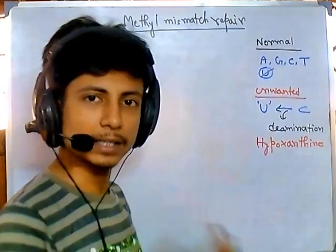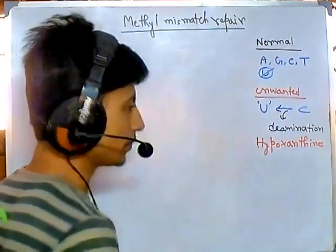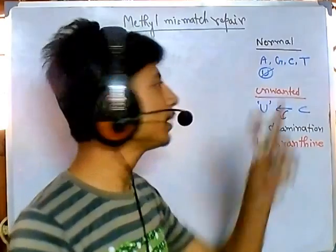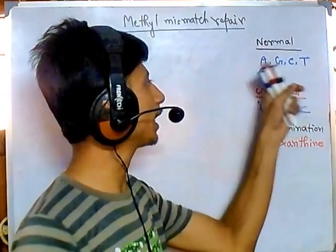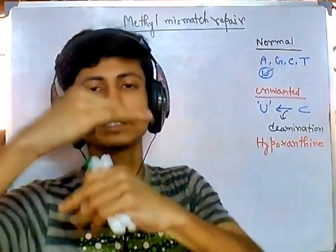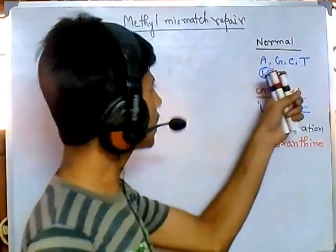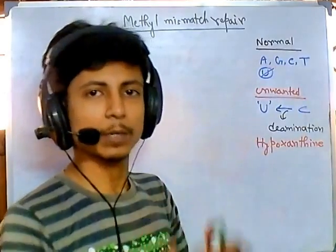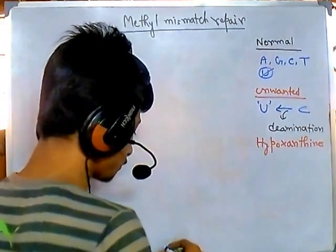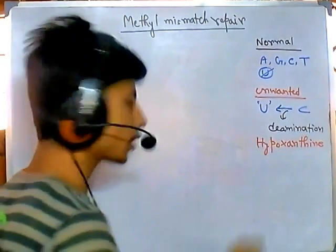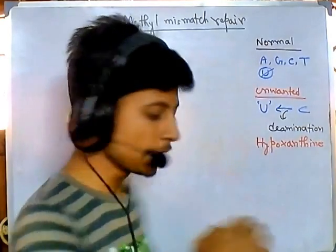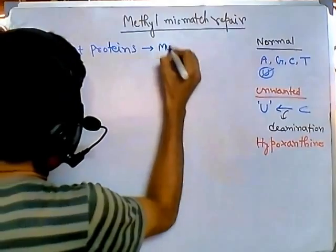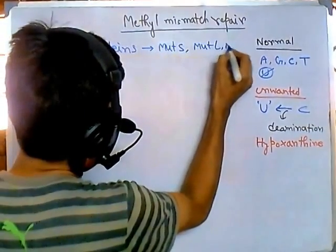Misincorporation of bases during the polymerization process can also occur, and we need to cut out those unwanted bases so that a correct base can replace them. That's why we use methyl mismatch repair. 'Mismatch' means that instead of normal A-T or G-C pairing, if another base is incorporated it forms a bulge or loop-like structure in the DNA. This repair system handles both unwanted nucleotides and mismatches. Three important proteins are required, called Mut proteins.